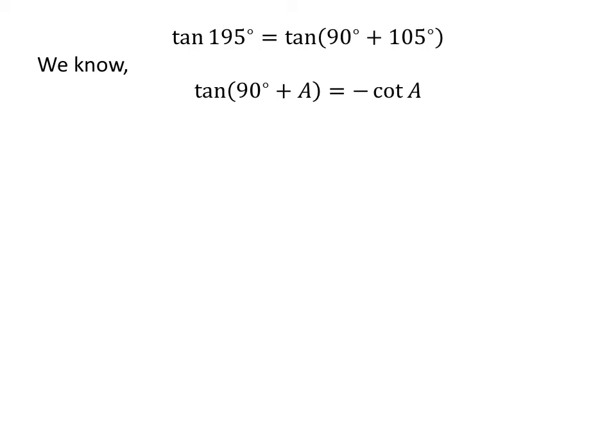The proof of this trigonometry identity is explained in the video appearing in the upper right corner, and the link is also given in the description section. So, tangent of 195 degrees is equal to minus cotangent of 105 degrees.